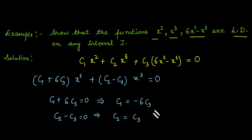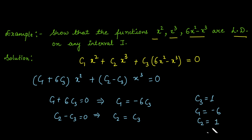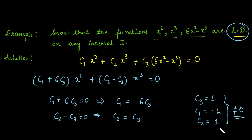Can we find any nonzero value of c3 for which c1 and c2 are also nonzero? The answer is yes. If we set c3 = 1, then c1 = -6 and c2 = 1. Since not all constants are zero, these functions are linearly dependent.